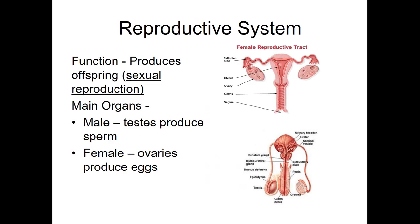The reproductive system we've mostly already covered when we talked about sexual and asexual reproduction. The testes produce sperm and the ovaries produce eggs. They also produce hormones, which are part of the endocrine system.